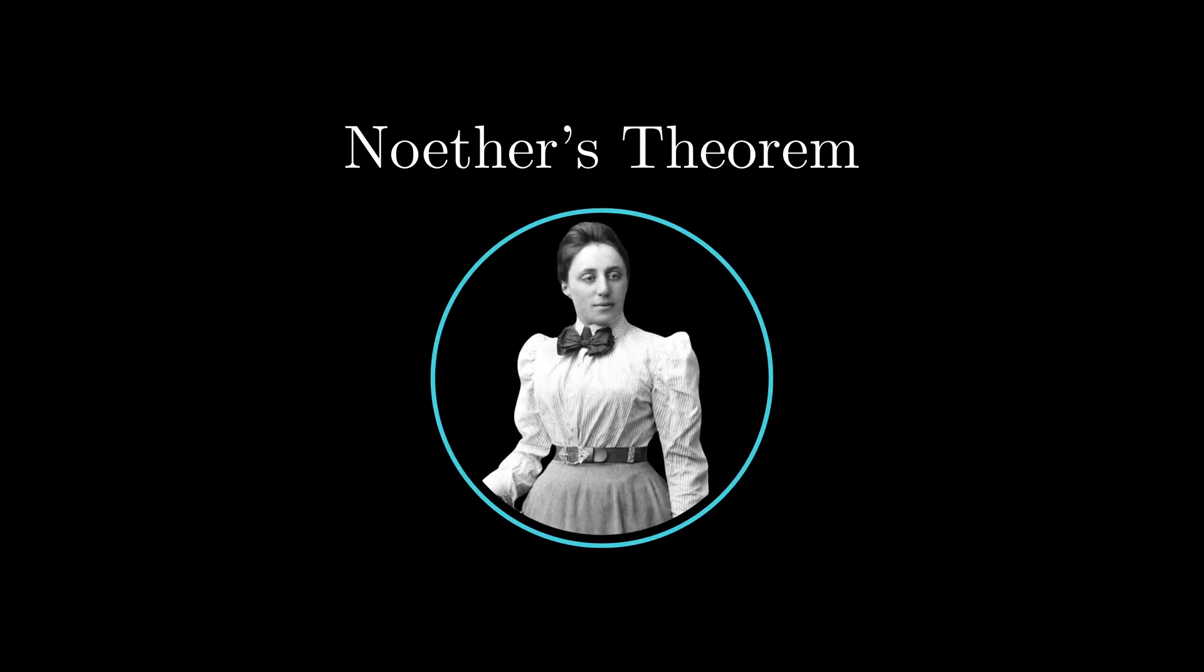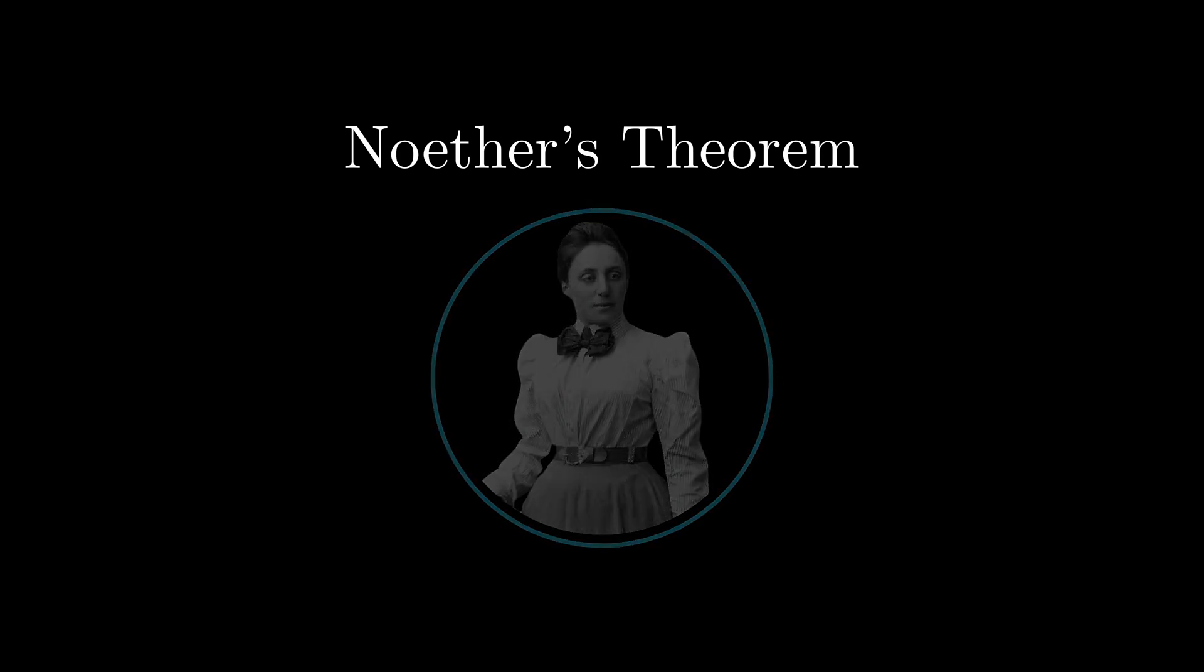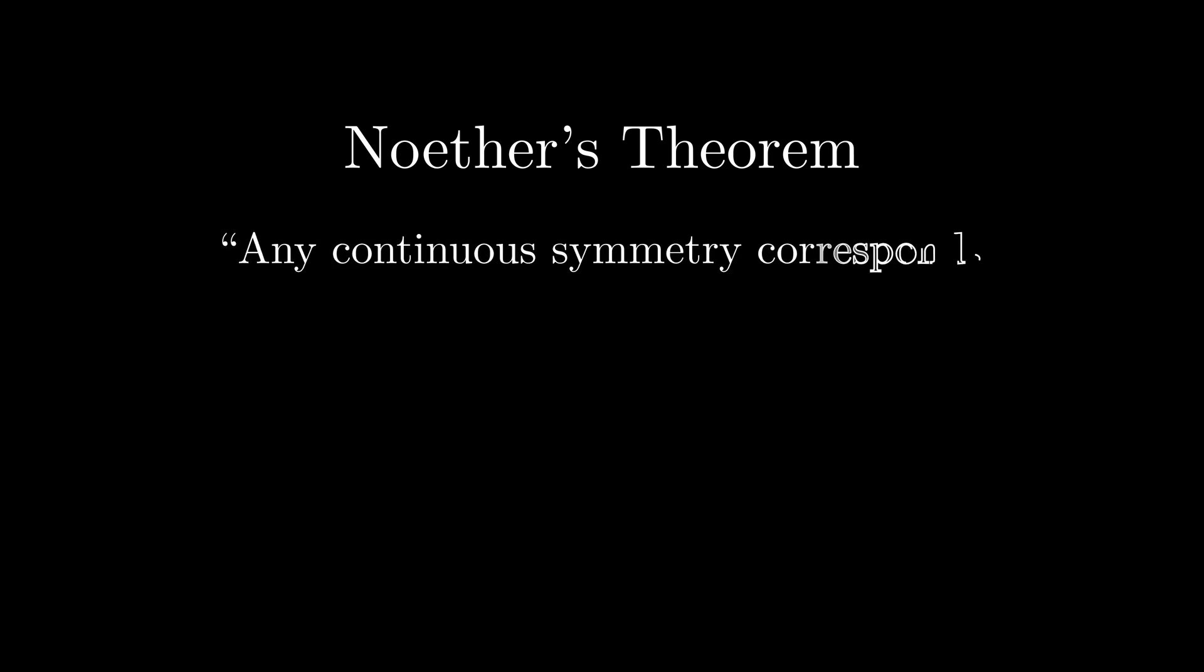This theorem was formulated by the German mathematician Emmy Noether around 100 years ago. It states that for any continuous symmetry that you can find in a theory, there will always be a corresponding conserved quantity.